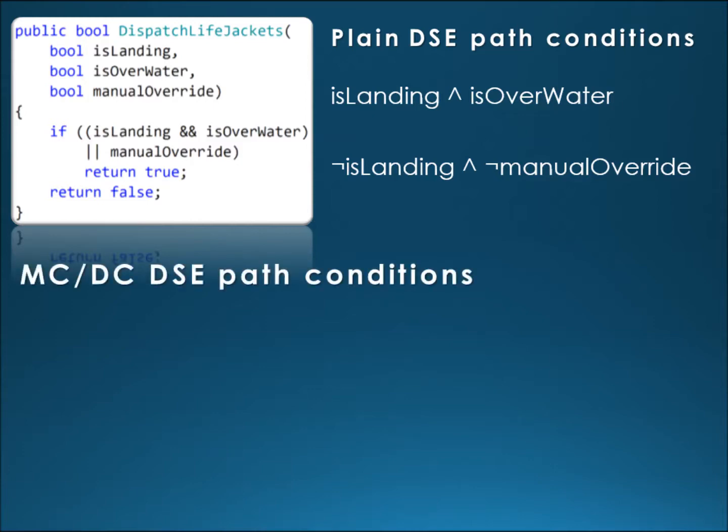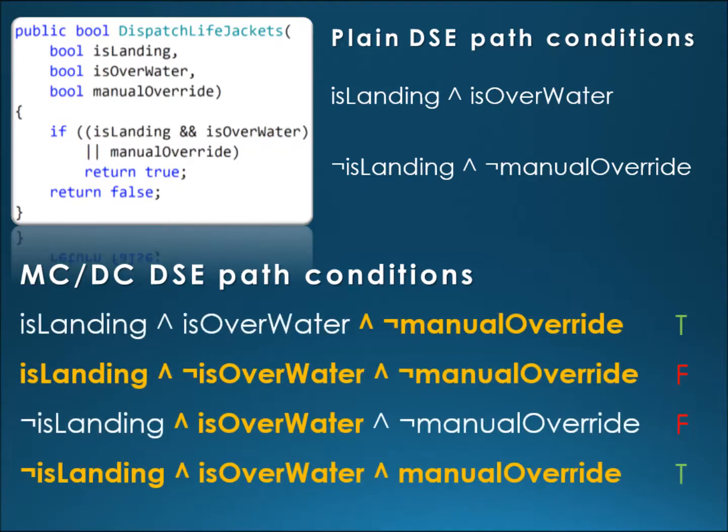Now, how path conditions augmented with MCDC coverage would look like? In bold orange are marked additions as compared to the plain path conditions. To the right we have a hint on the evaluation result of each path condition. We want to meet the MCDC coverage criterion of testing that each variable independently affects the result of the entire expression. If we look at the two topmost augmented path conditions, we will see that the is over water variable indeed does that, as remaining variable values are the same. Similarly, the first and the third from top path conditions independently exercise the is landing variable and the two path conditions at the bottom do this for the manual override variable.